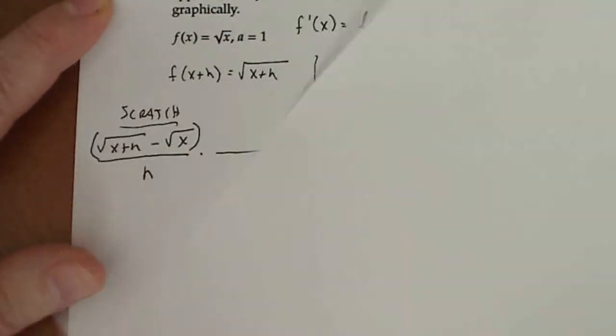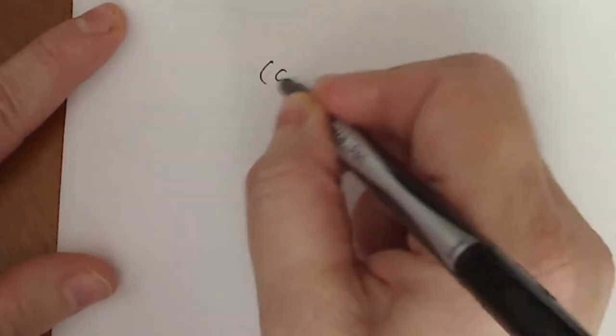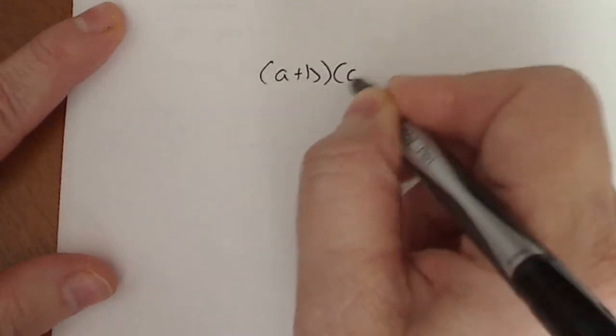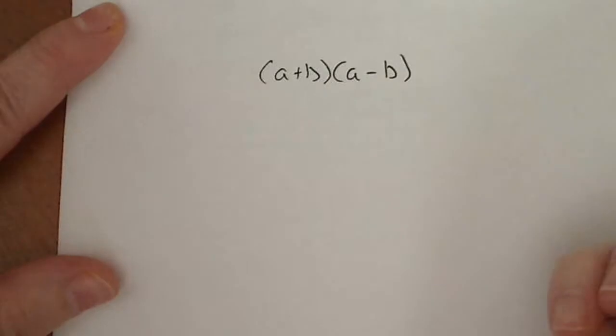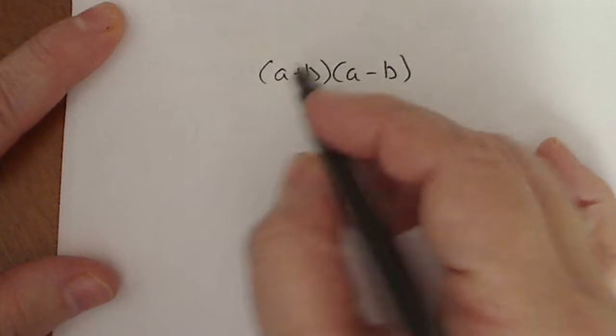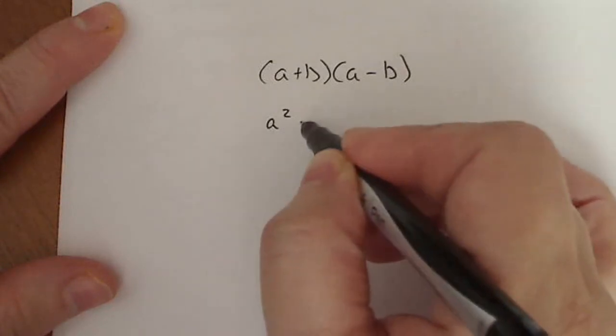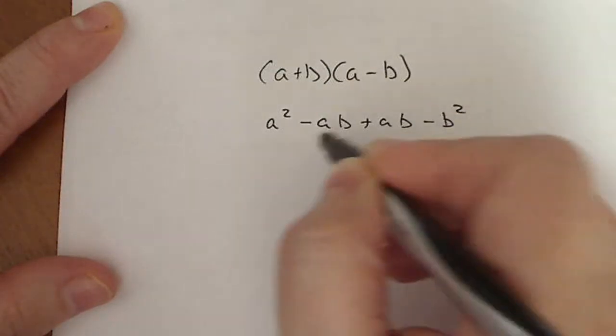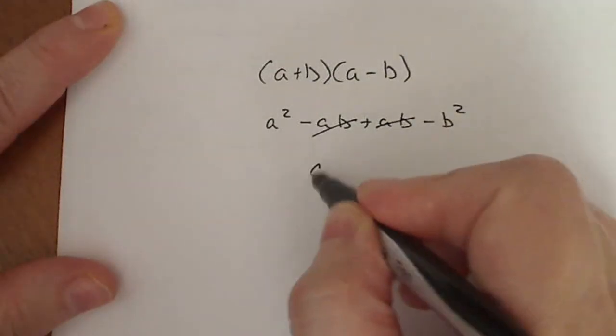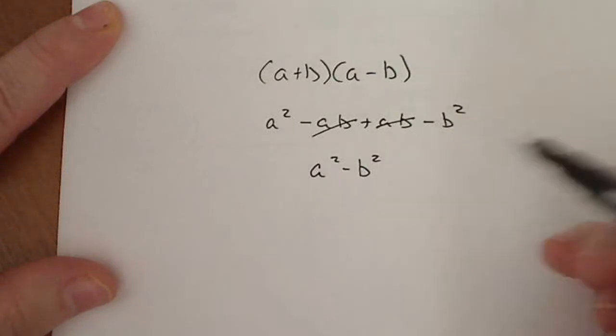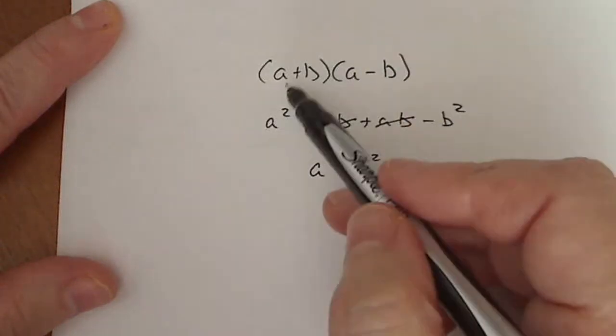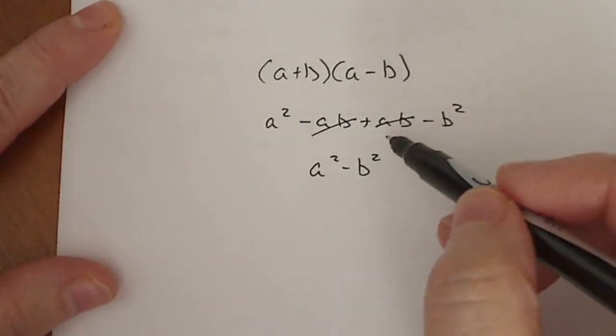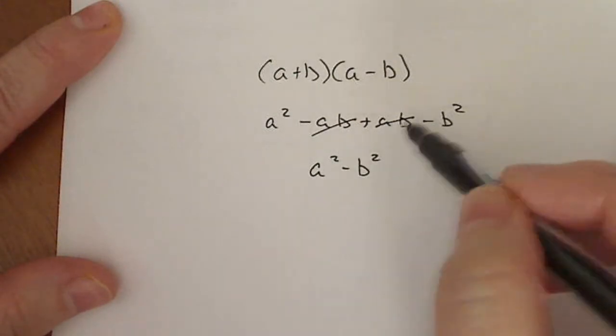So if I think about the conjugate, let me write about that over here. The conjugate is a special binomial that when you multiply it to another binomial something fun happens. So you have to think about something like a plus b and a minus b. Those are conjugates. Why? When I multiply these out, so I have a squared minus ab plus ab minus b squared, notice the middle terms go away and I'm left with a squared minus b squared. The conjugate of a binomial will always create this process to which the middle terms disappear.